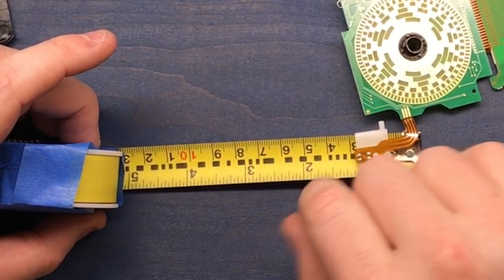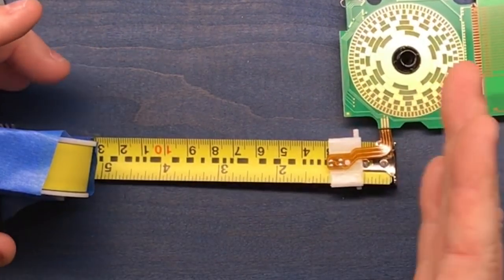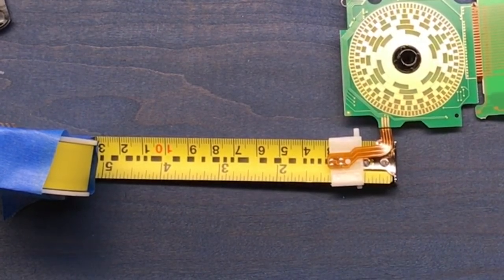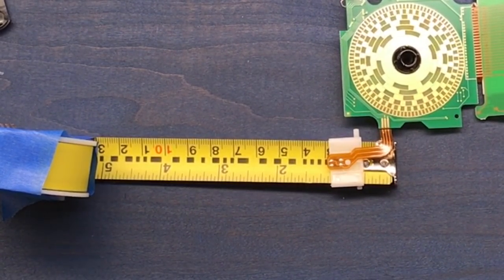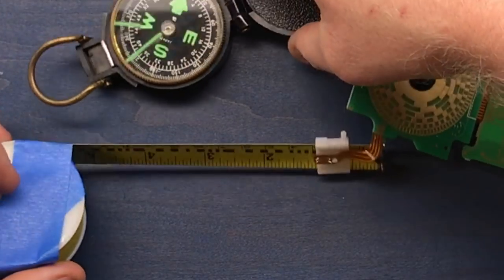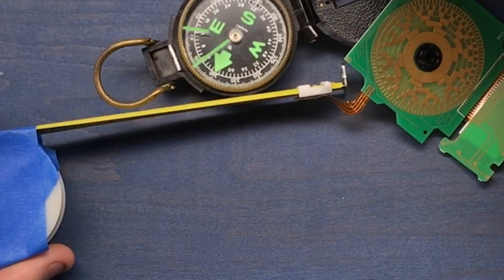This is basically a magnetic strip, so let me see, I think I have a compass. So we should be able to pick up something here.